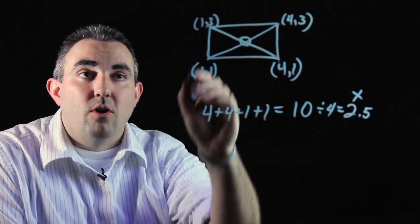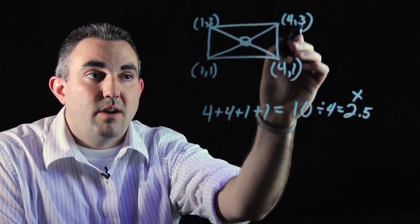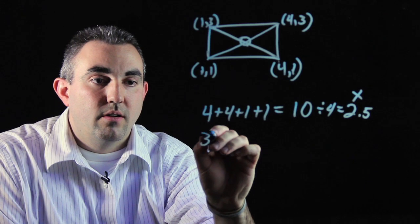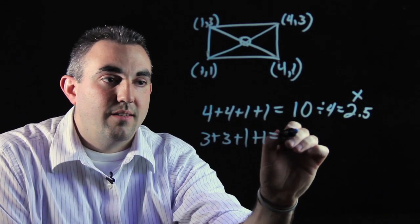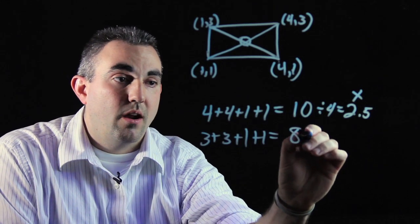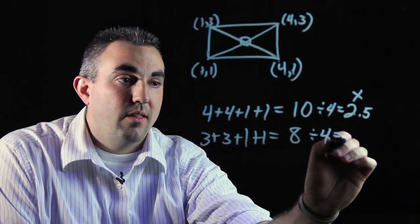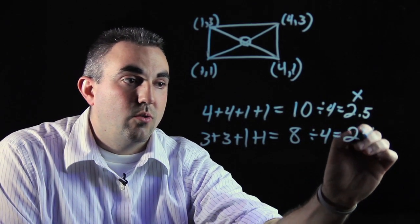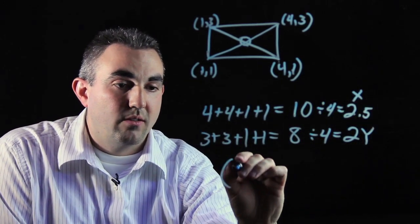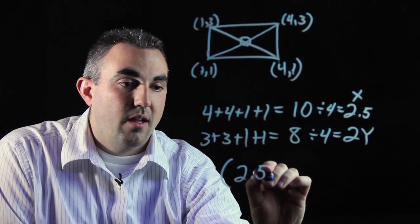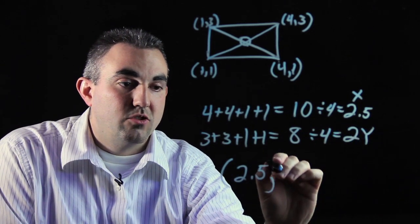Now you want to do the same thing with all your y coordinates: three plus three plus one plus one. That's six plus one is seven, plus one is eight. You want to take that number and divide it by four, that gives you two. This is your new y number. So our centroid will be located at x point 2.5 and y point being two.